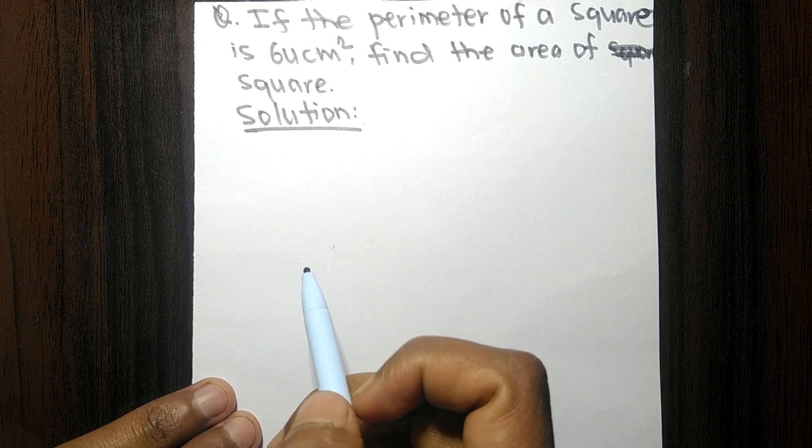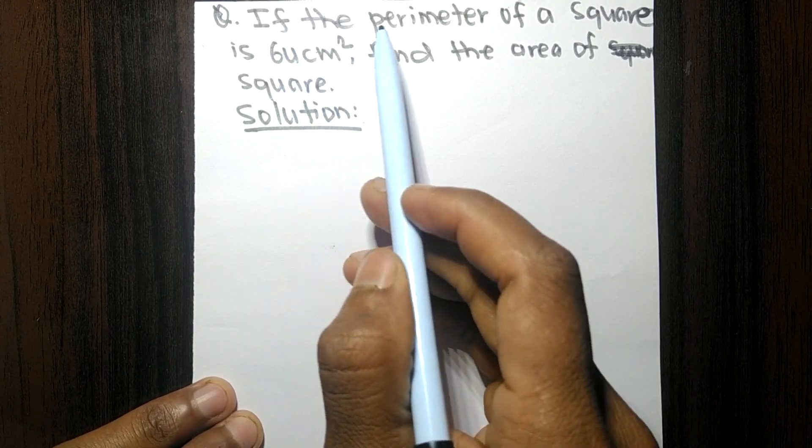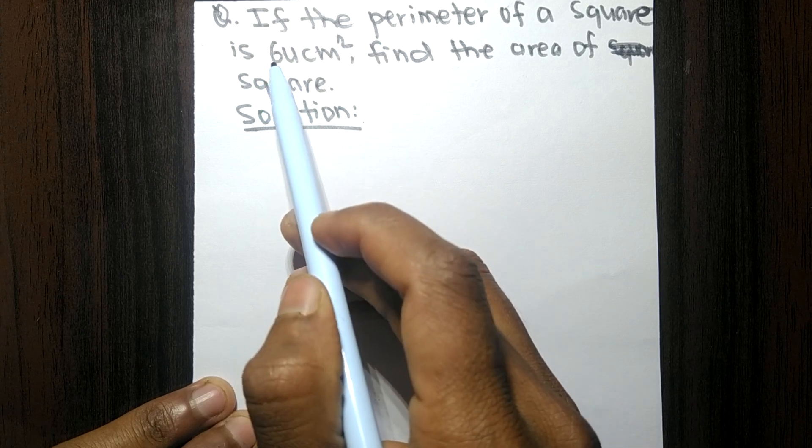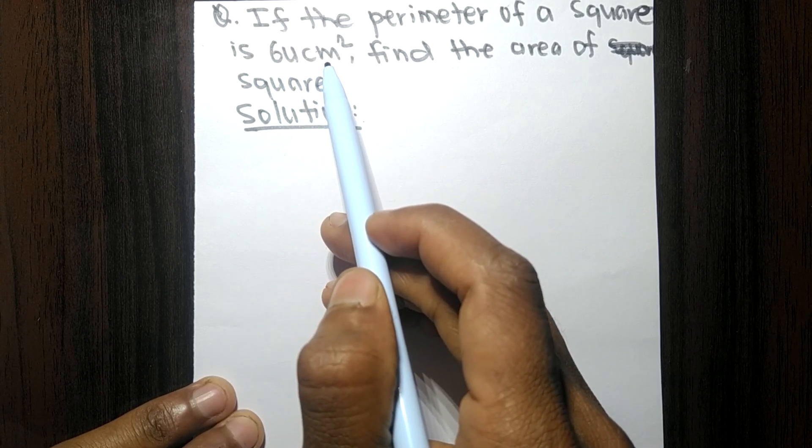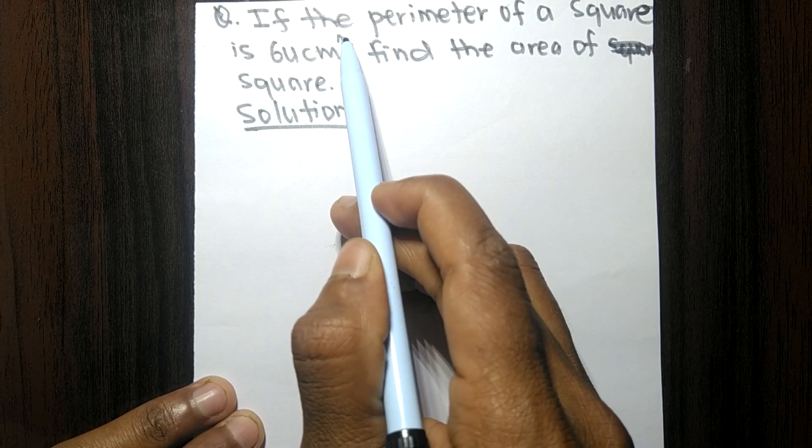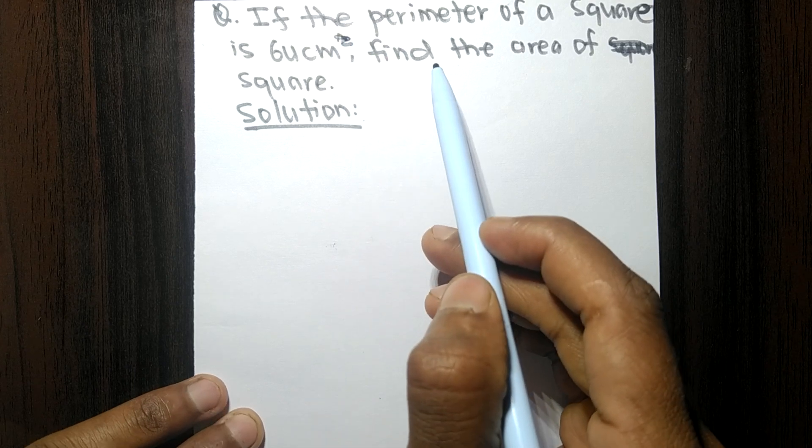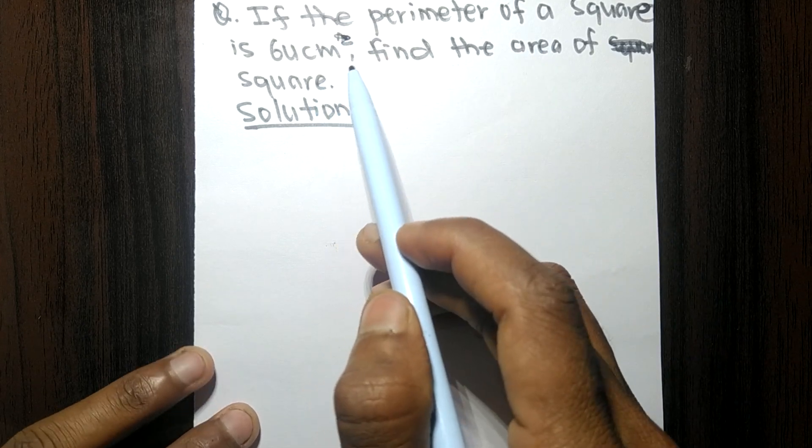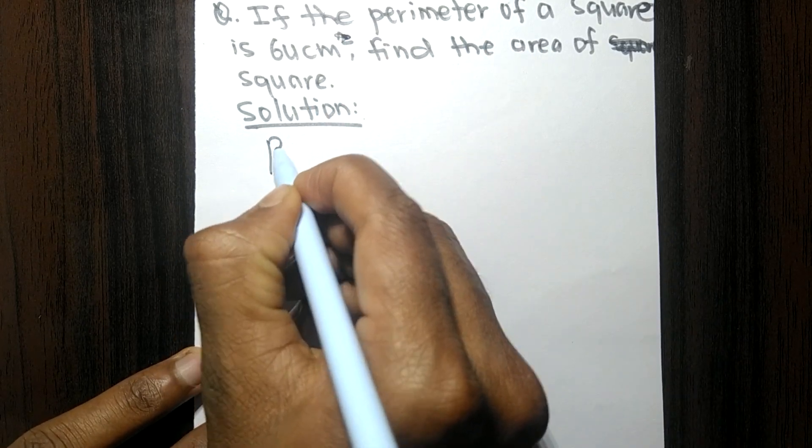Today in this video we have given: if the perimeter of a square is 64 centimeters, find the area of the square.